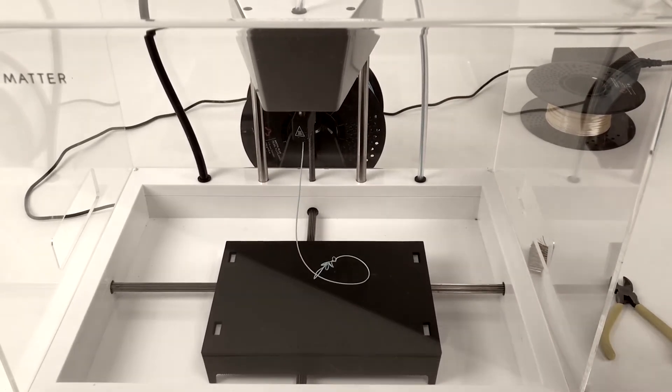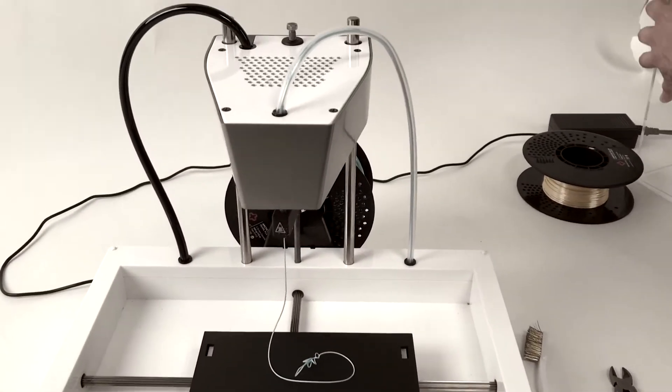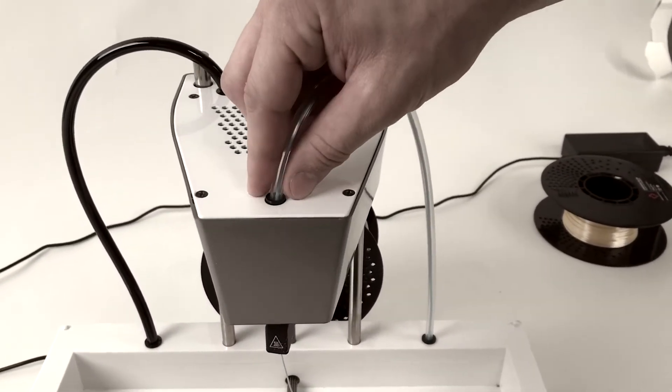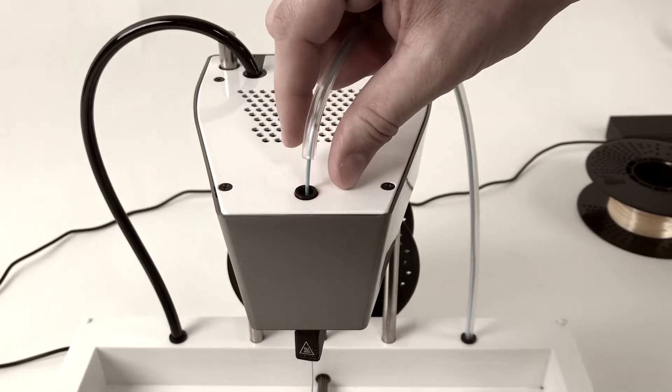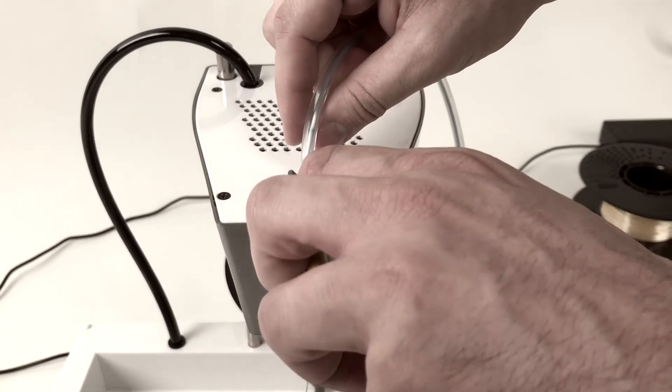But since the filament is moving normally, we will remove the clear cover, pull the filament tube out of the top of the MOD-T's carriage, take our clippers and clip the filament.